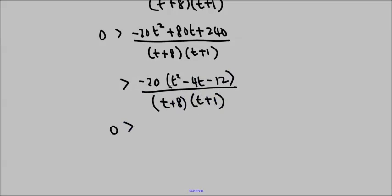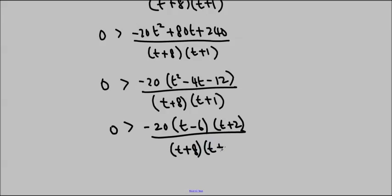We'll collect like terms. We get negative 20t squared plus 80t plus 240 over t plus 8 times t plus 1. And we do want to factor this. So we're going to common factor first: negative 20 times t squared minus 4t minus 12 over t plus 8, t plus 1. We've got to factor the top here. And I'm now in fully factored form.